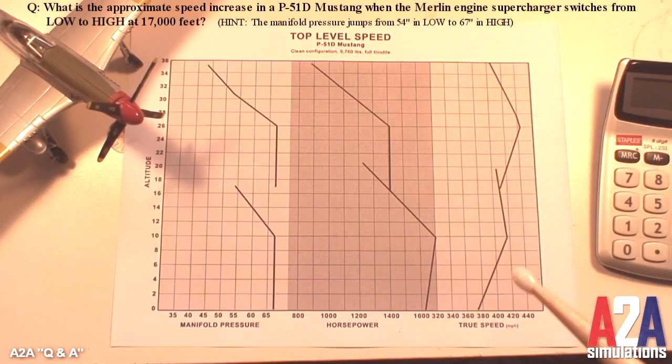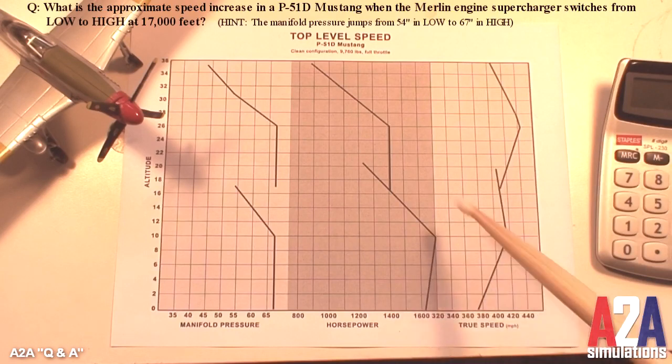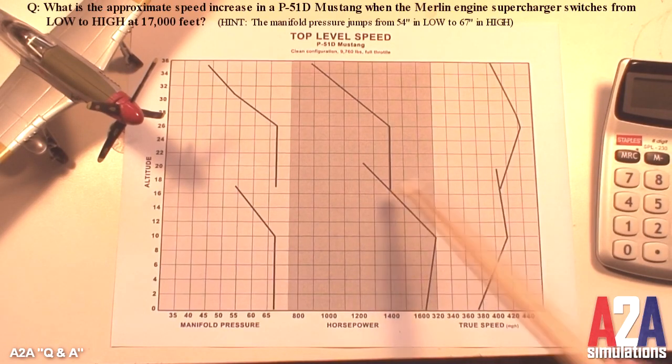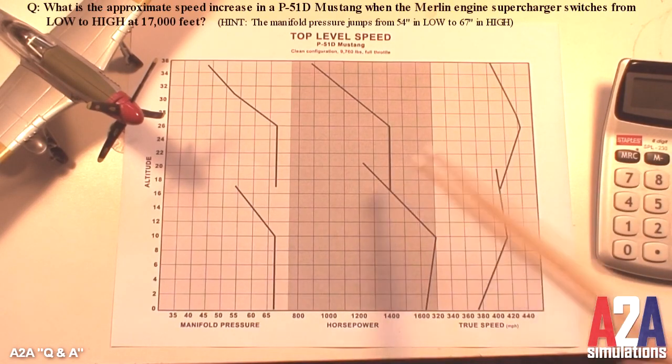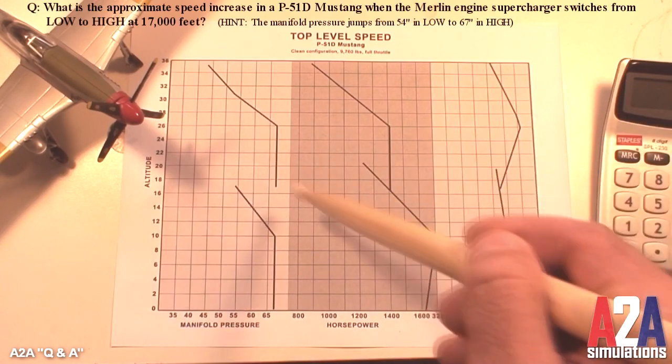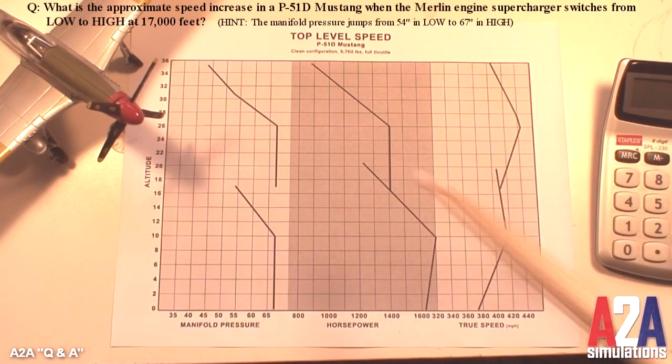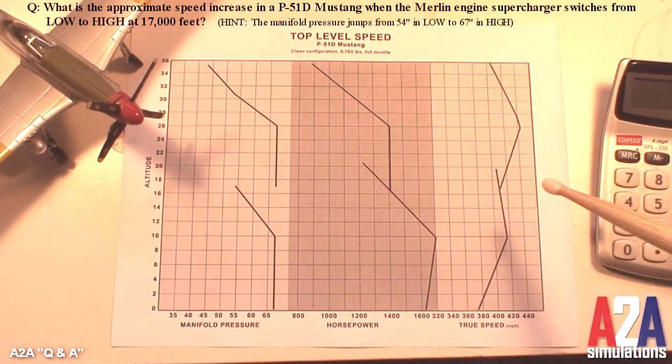So we have two speeds to our supercharger. So at this point, we switch to the higher gear. At that exact point, we're producing the same exact power than we were in our lower gear, but we are producing 67 inches. You think you're producing more power, but you're not. You're producing the same. Speed is not going to change.